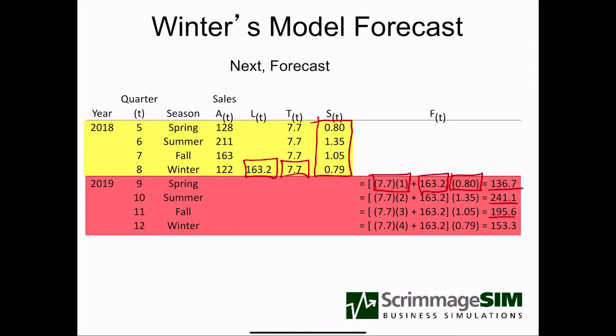Similarly, for the second, third, and fourth periods, we continue increasing the number of periods of trend we add to the model and picking the appropriate seasonal factor. With the decomposition initialization, our first forecast from Winter's model is identical to what we would get from decomposition.